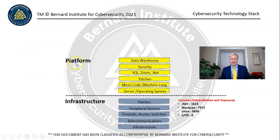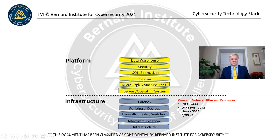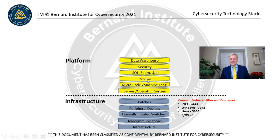Above the infrastructure layer, we have platforms — the next layer. Infrastructure provides the bed that everything sits on. At the platform level, we have servers with operating systems, microcode, and machine languages such as EBCDIC, ASCII, or zeros and ones. These things require patching, usually micro-level patching. Then you have utility programs that sit on top of the operating system and allow you to perform other types of functions.